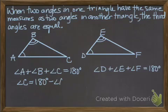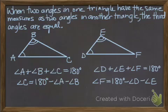Now we'll just do some algebra and subtract angle A and angle B from both sides. We have angle C equals 180 minus angle A minus angle B. On the right, we're going to do the same thing with angle D and angle E. We have angle F equals 180 minus angle D minus angle E.